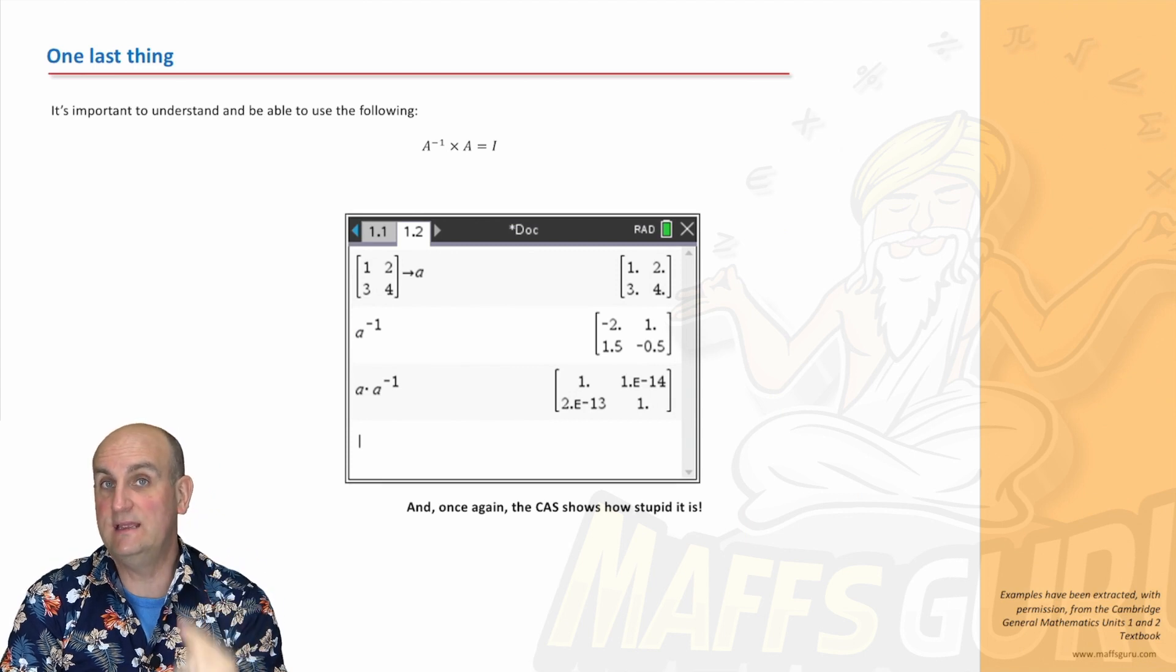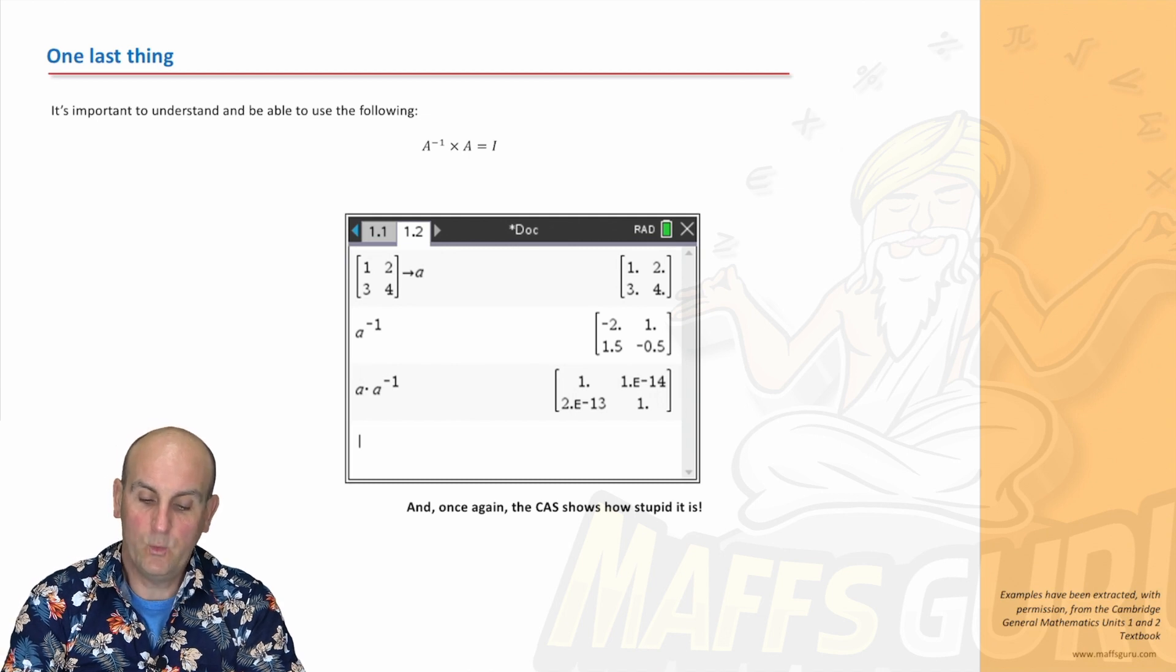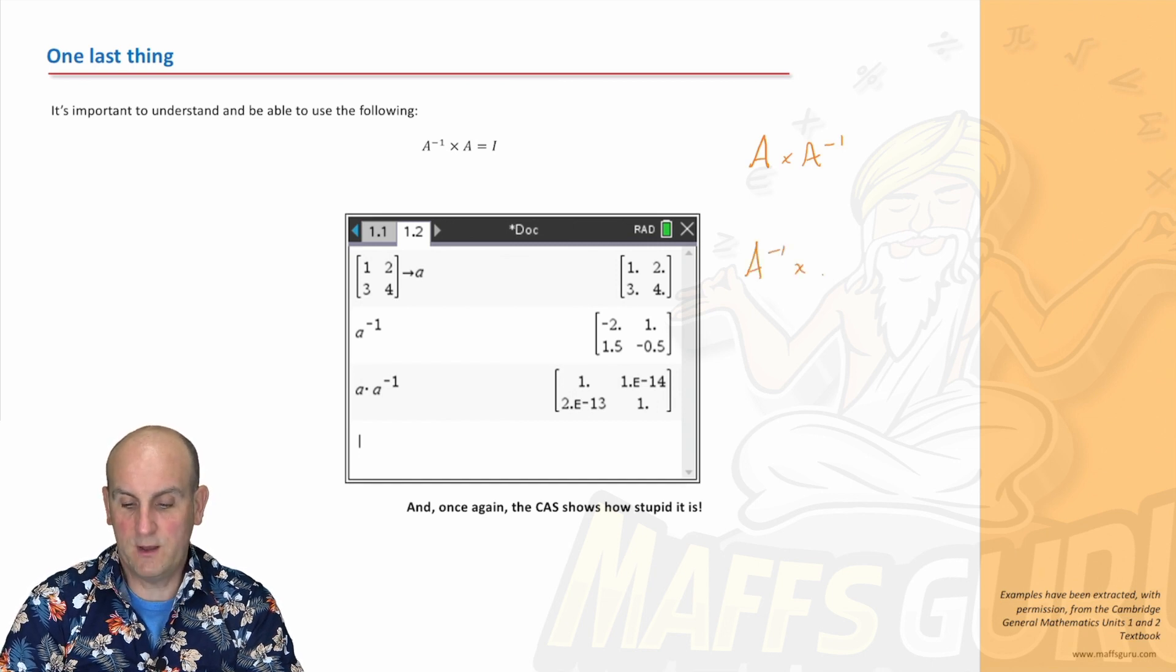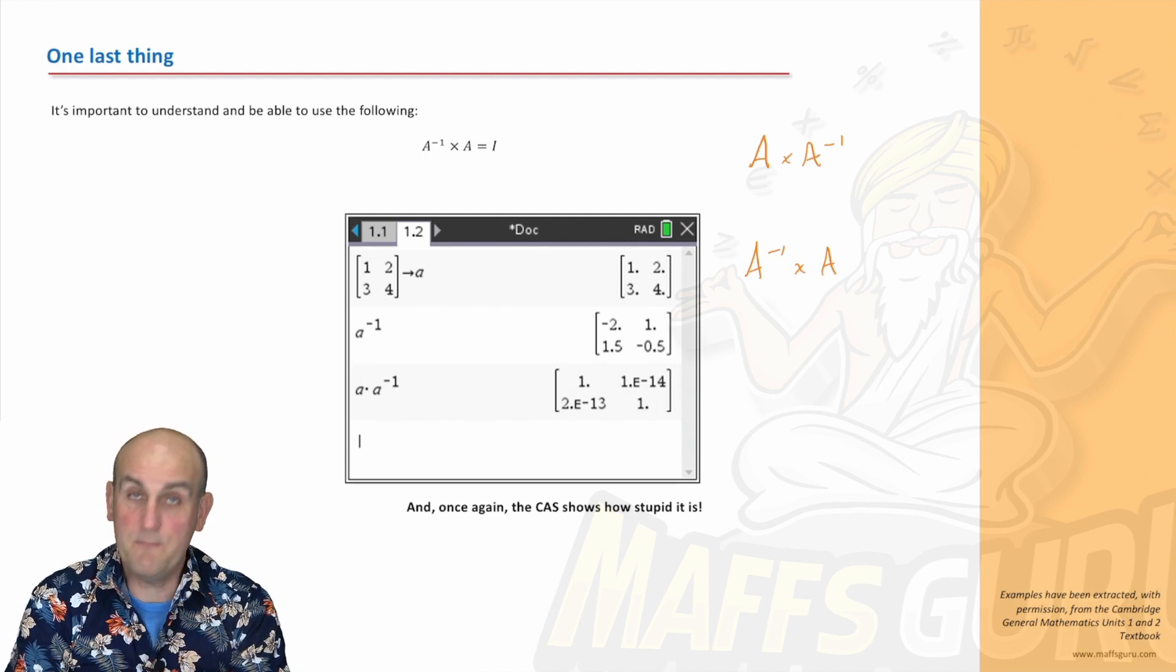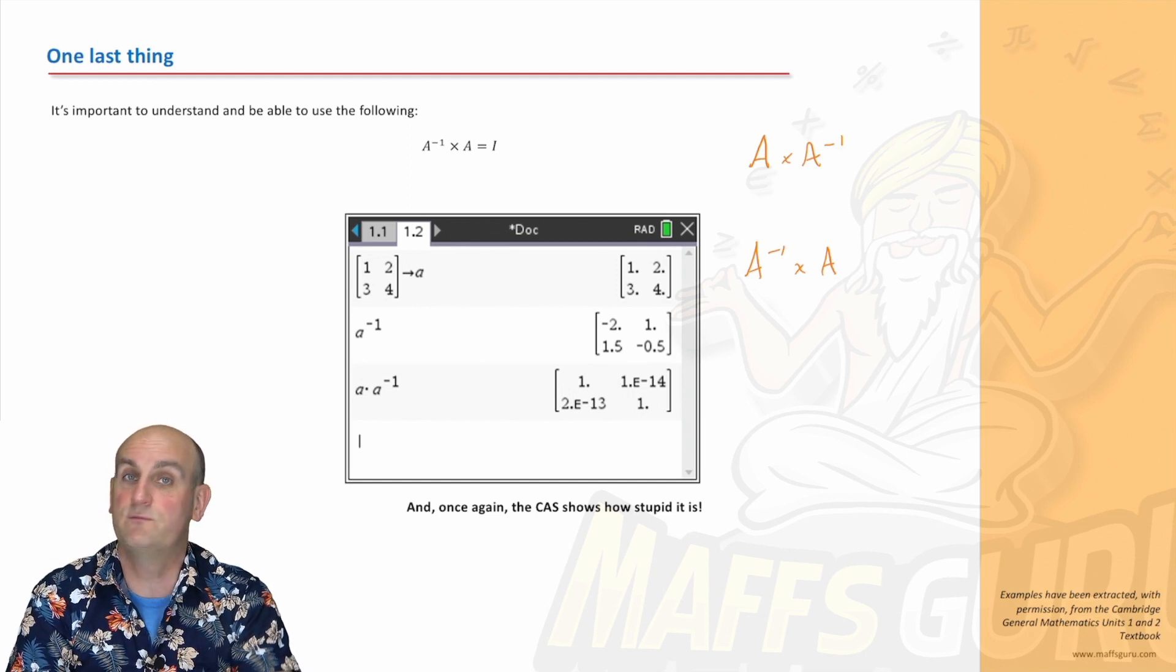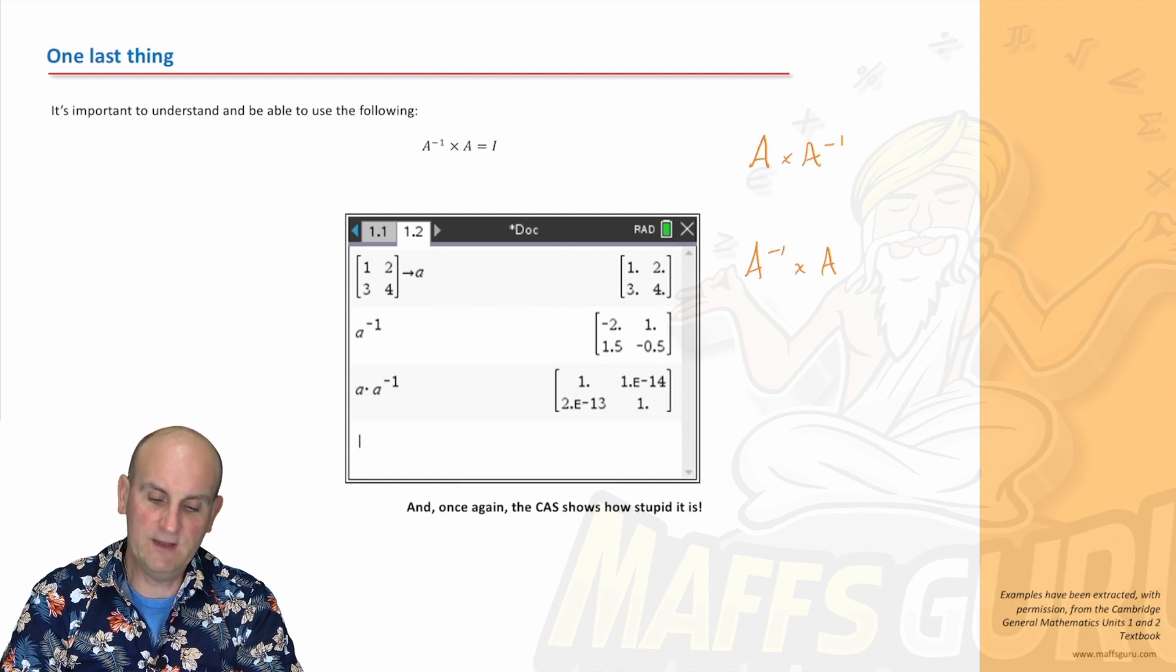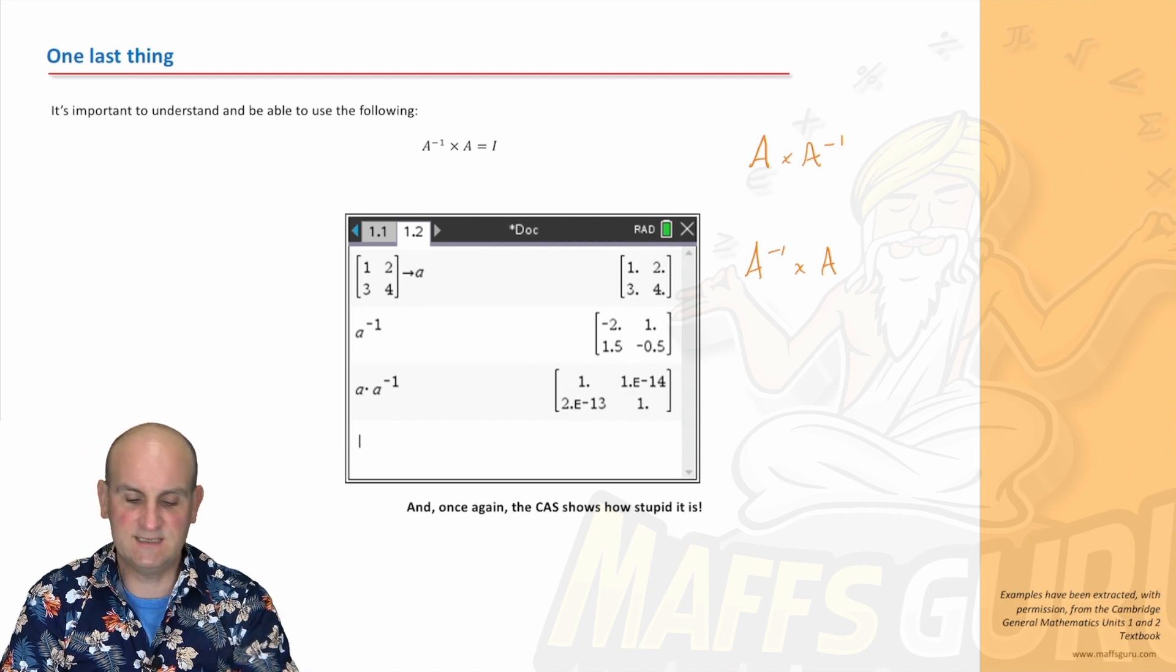There is one last thing that, again, is going to be important for you to know. So, the question is, what happens when I multiply a matrix by its inverse, or the inverse by the matrix? Now, again, normally, like 2 times 3 is 6, 3 times 2 is 6. With numbers, we can swap them around, and it makes no difference. With matrices, there are huge differences, and we've seen that in previous videos. Yes, A times B isn't always the same as B times A. In fact, it very rarely is the same. But, what I've now done is said, well, let's see what happens when you multiply a matrix by its inverse.